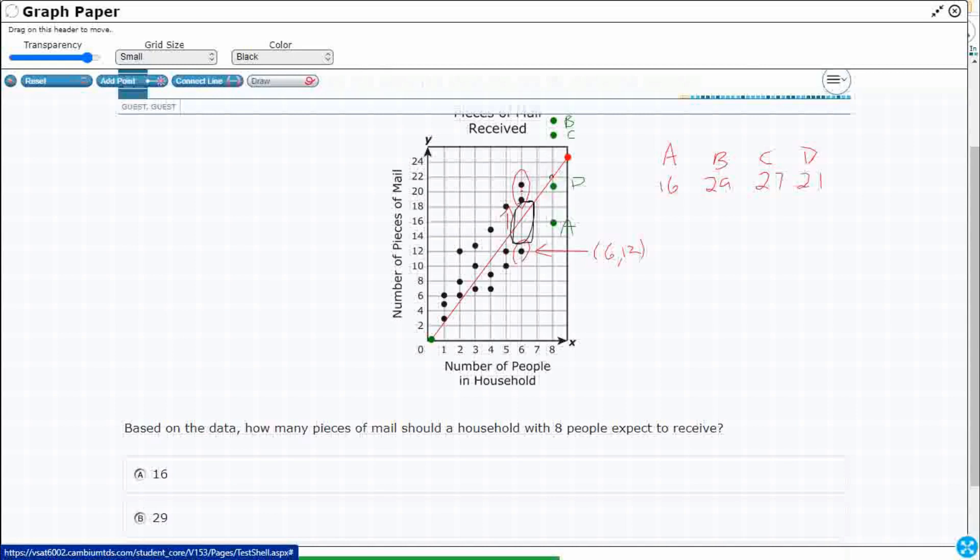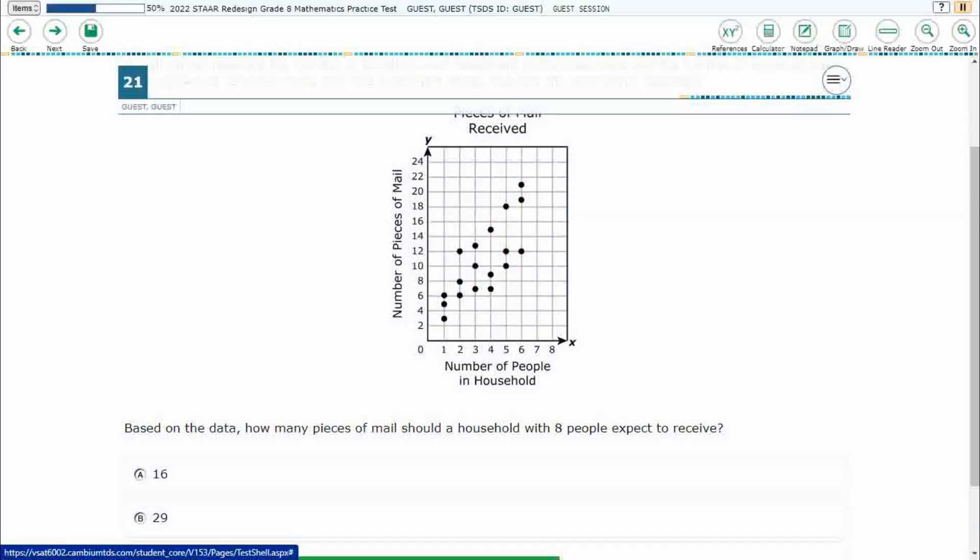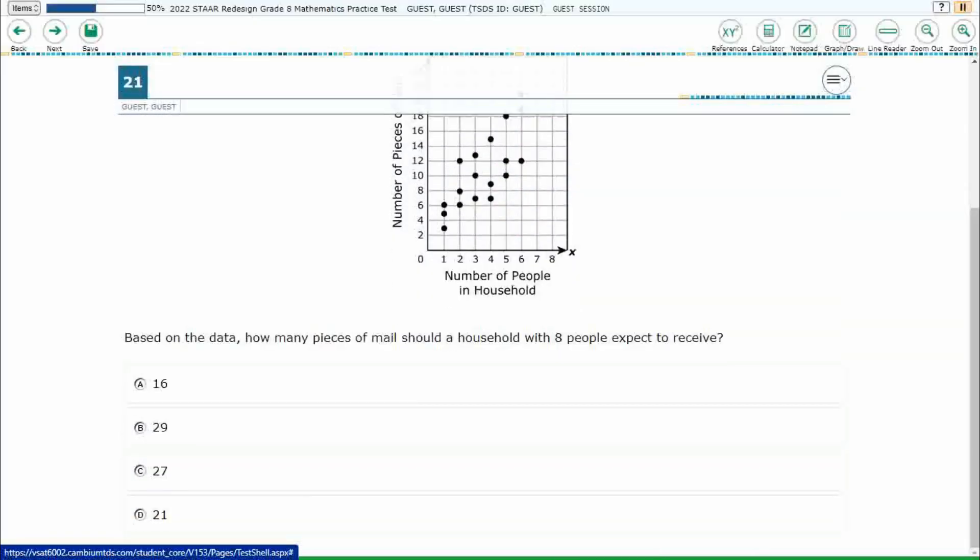I landed right at 22 when I crossed the 8 people mark, and I don't exactly have a 22, but the closest right there is going to be D, 21. So that is going to be my answer, D, 21.